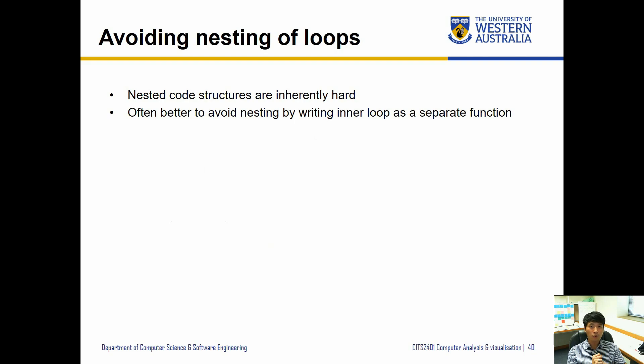So there are some ways to avoid using nesting of loops, because the nested code structures are inherently hard. You have to understand and make sure that the inner loop can take care of all the items. And sometimes not all nested loops will have, say for example, same sizes or same expected data values or types. So it is often better to avoid nesting by writing inner loop as a separate function.